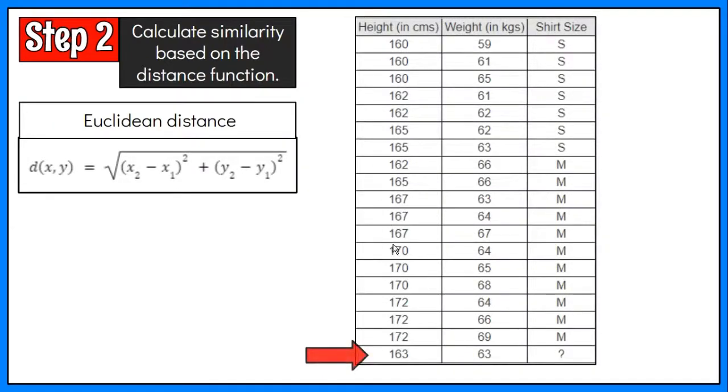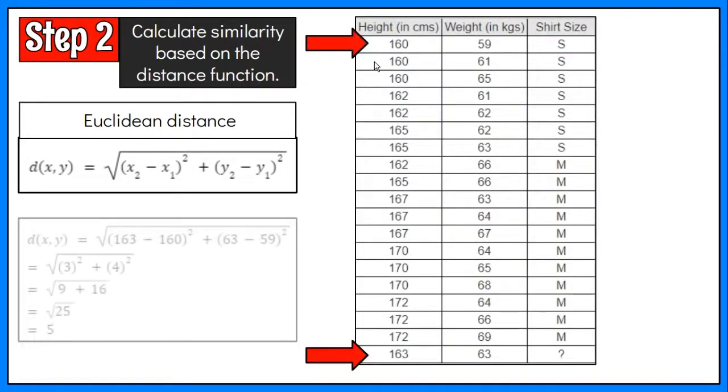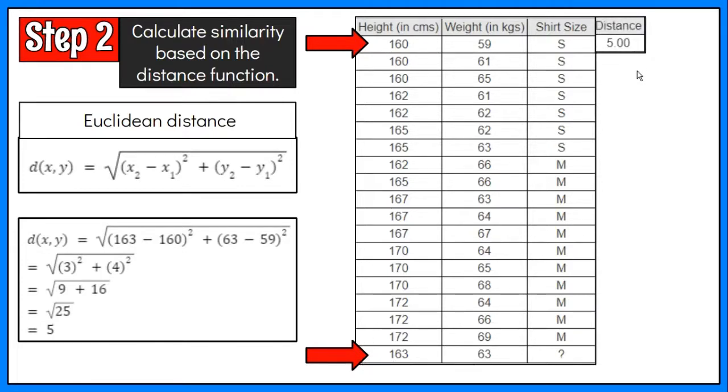For example, in two data points, the Euclidean distance is the square root of the squared of x2 minus x1 plus the squared of y2 minus y1. This is the computation of distance between the first sample labeled data and the new data. We continue finding the distance between the new sample and all the training cases.